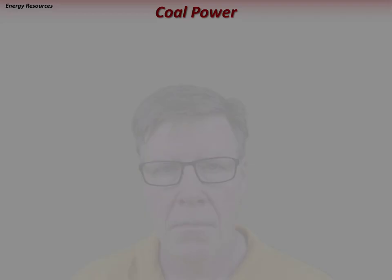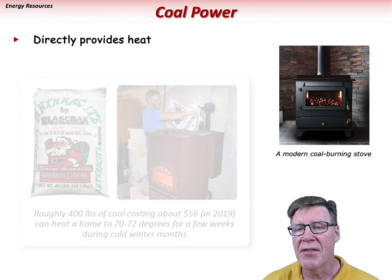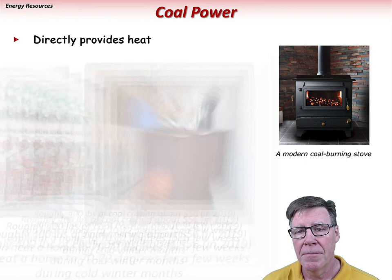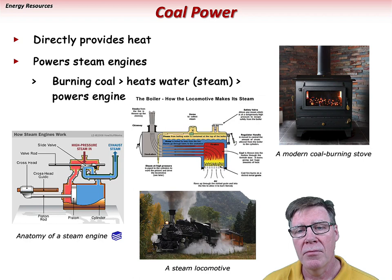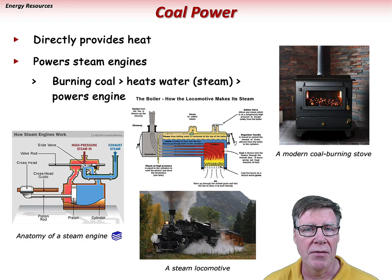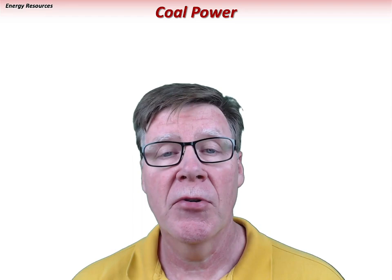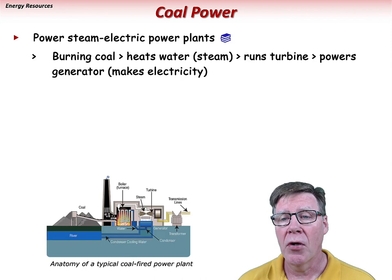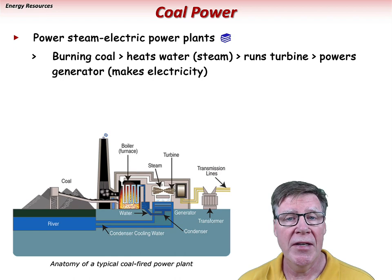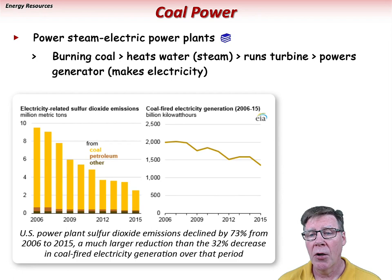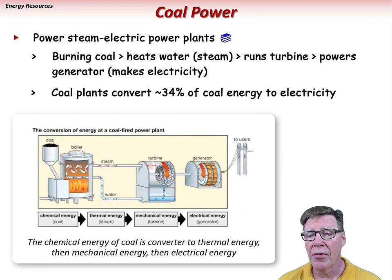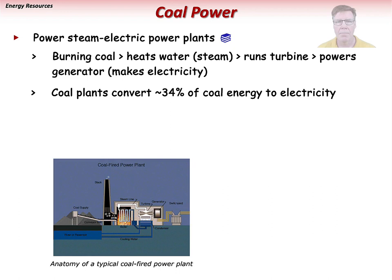Burning coal directly provides heat and was, and still is, used in furnaces and stoves around the world. Coal is also used to power steam engines — burning coal heats water, water boils and turns to steam, and pressurized steam drives pistons. Using a similar process, coal powers larger steam electric power plants: burning coal creates steam that runs a turbine powering a generator, which makes electricity. Emissions from such power plants have become highly regulated, greatly reducing sulfurous emissions. These coal-fired power plants convert around 34% of the coal's energy into electricity, providing around 18% of U.S. electrical generation as of 2023.